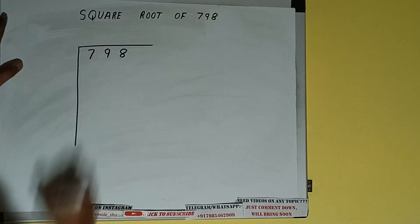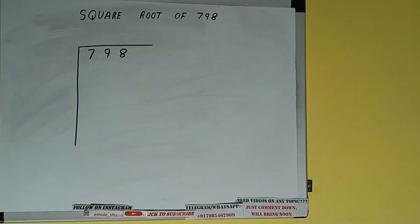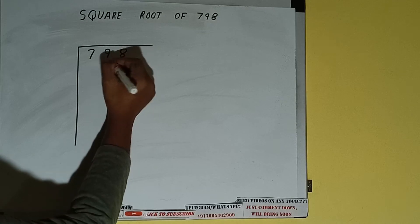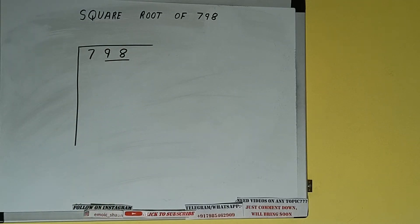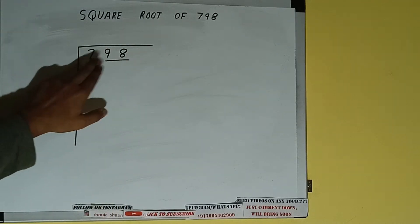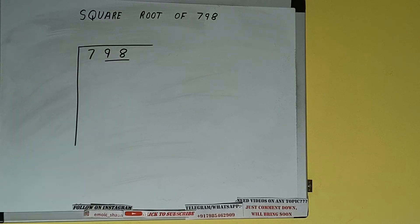The next thing we need to do is form pairs from the right-hand side. One pair will be 98, and 7 will be left out. So first we'll write 7, and then we'll bring down the pair.